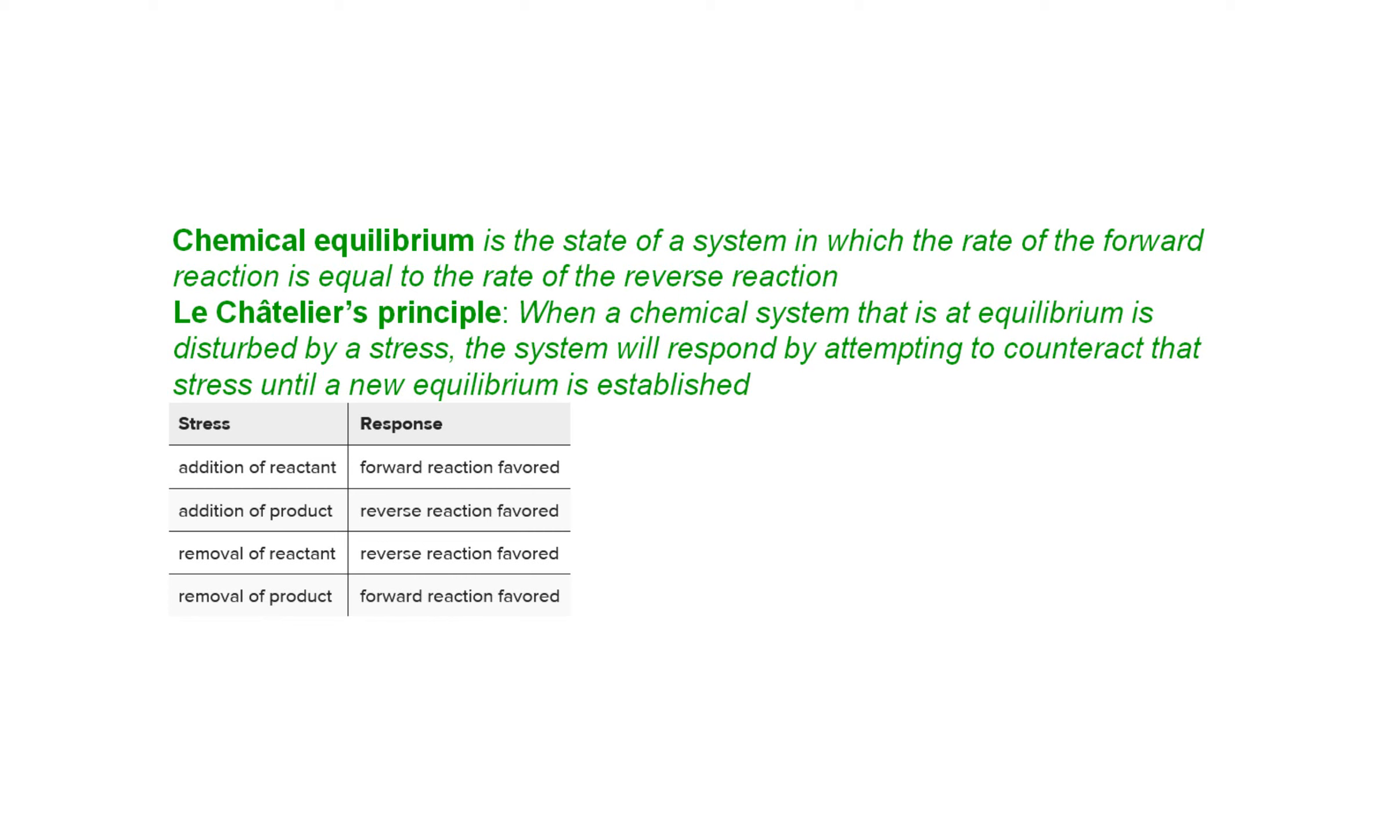Chemical equilibrium is a state at which the forward reaction is equal to the rate of the reverse reaction. So the reactants are becoming products at the same speed that the products are becoming reactants. Le Chatelier said that if something changes in the reaction, the equilibrium will shift to make it equilibrium again.